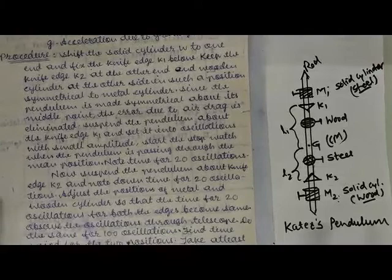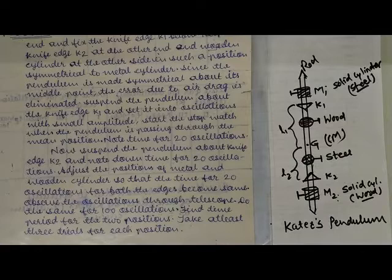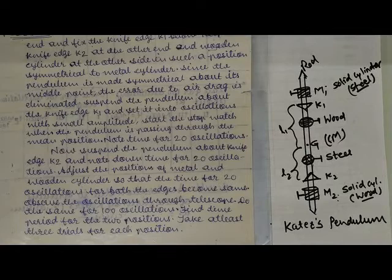Once both time periods about K1 and K2 are exactly the same, we can move forward. Then we take the same procedure but now for 100 oscillations — we find the time period with respect to 100 oscillations. Again, we take two or three trials for more accuracy and take the average: the mean time for 100 oscillations about K1 and about K2.